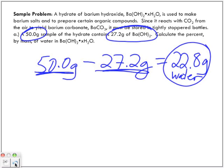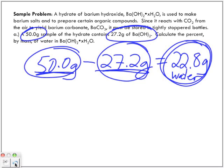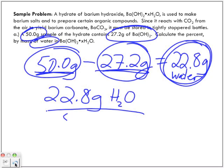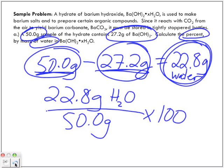We know that if we have 27.2 grams of the barium hydroxide, we add it to what we've just calculated here of water, we're going to get our 50.0 gram sample. But the question asks us to calculate the percentage by mass of water. We're going to take this 22.8 grams of water and divide it by our complete sample. We're going to divide these two and multiply it by 100, and we get a total of 45.6 percent is water.